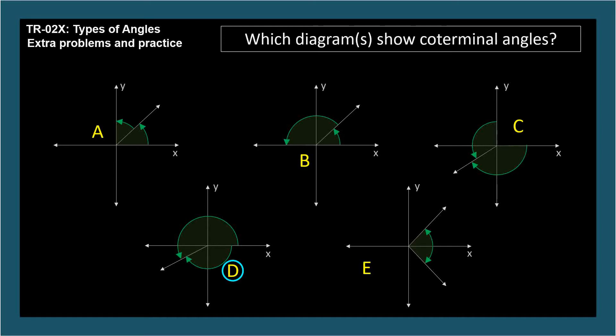The answer is D. Coterminal Angles are two different standard position angles with coincident terminal sides. C comes close, but the angles aren't both in standard position. Coterminal angles always differ from each other by multiples of 360 degrees.